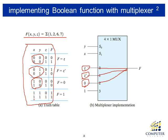In the remaining two rows, when X and Y are one and one, the expected function is always one. So constant one is directly connected to input three. This is how to implement any Boolean function with a multiplexer.